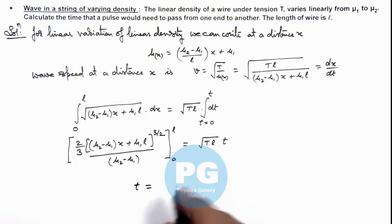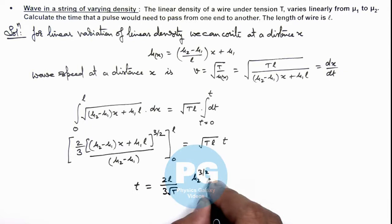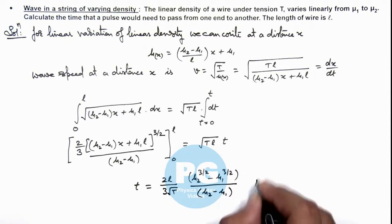That the value of time we are getting is t = (2L)/(3√T) × (μ2^(3/2) - μ1^(3/2))/(μ2 - μ1). This is the result of this problem.